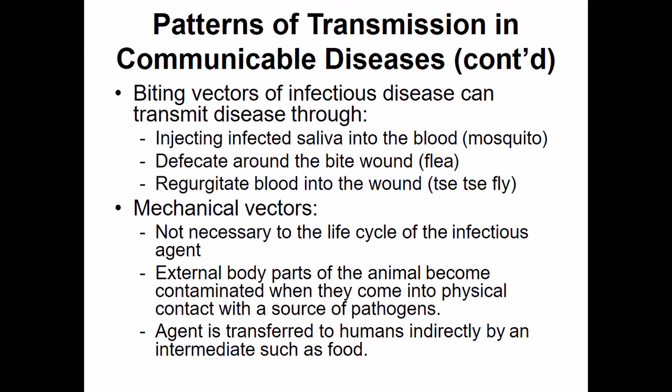When we think of how we can transmit diseases, we have biting vectors. Most of the time these are going to be insect-based, so we'll call those arthropod vectors. Occasionally, if you think of something like a rabid raccoon or rabid skunk, we can have a mammalian vector. But in the vast majority of cases we're going to have an arthropod — the biting vector. They can inject infected saliva into the individual, defecate around the bite, or regurgitate blood into the wound.